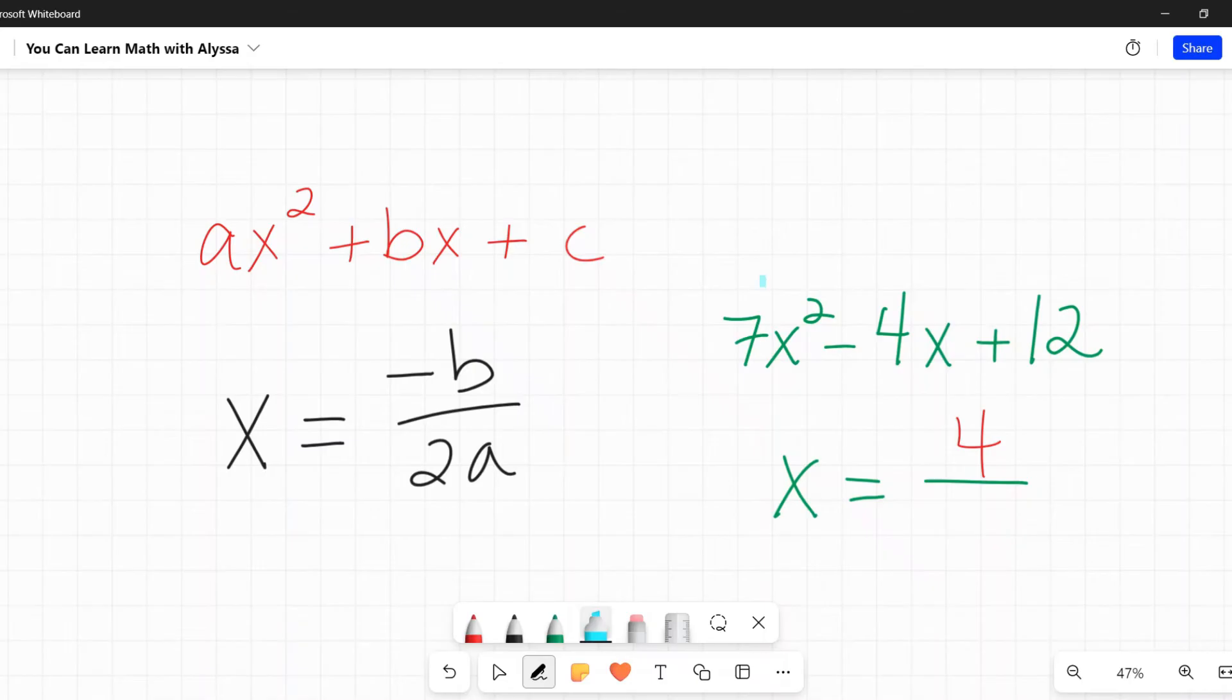On the bottom, I have 2 times a. My a is 7. So on the bottom, I have 2 times 7 or 14. I would then simplify this 4 over 14 to be 2 over 7. And x equals 2 sevenths would be the axis of symmetry for this parabola.